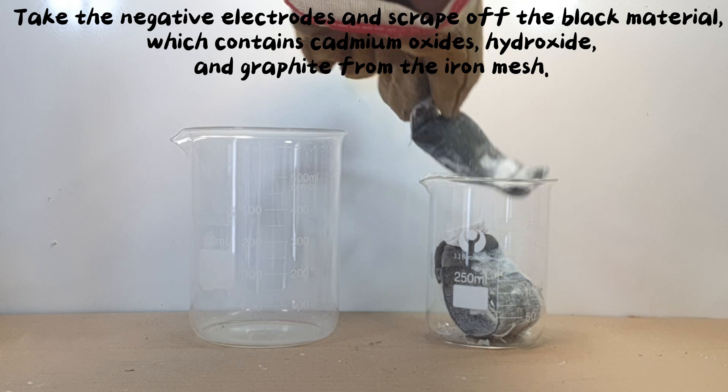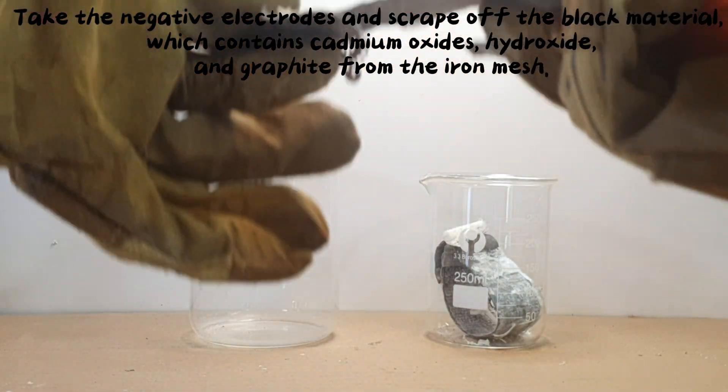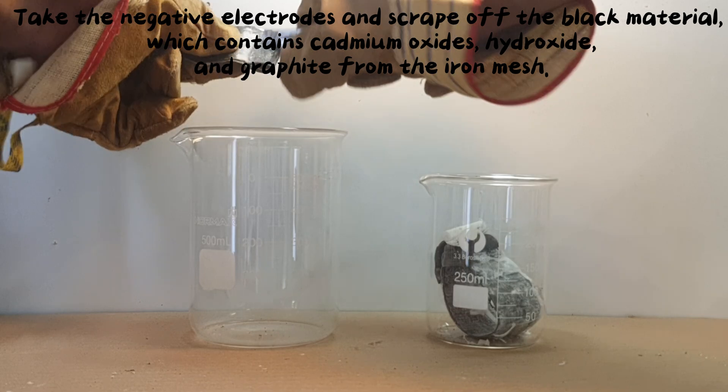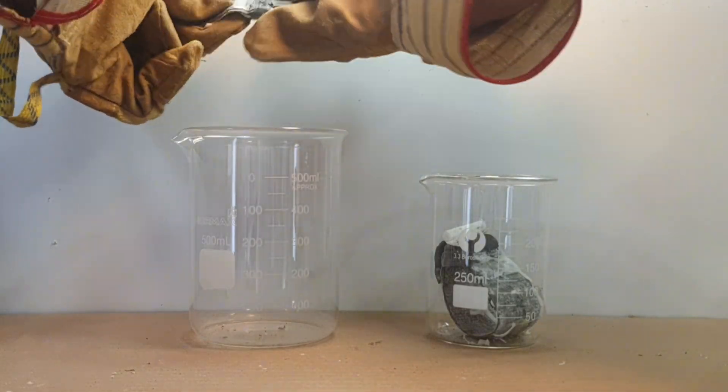Take the negative electrodes and scrape off the black material, which contains cadmium oxides, hydroxide and graphite from the iron mesh.